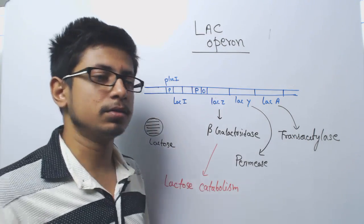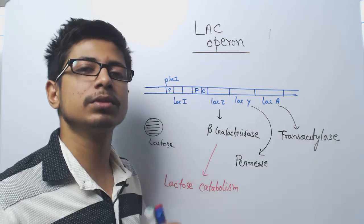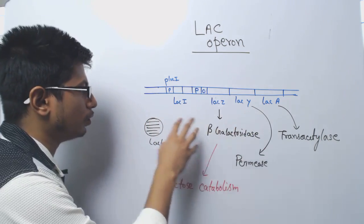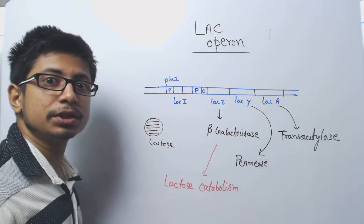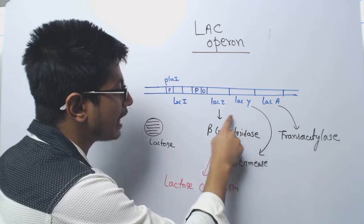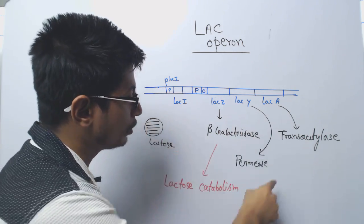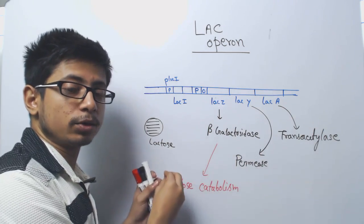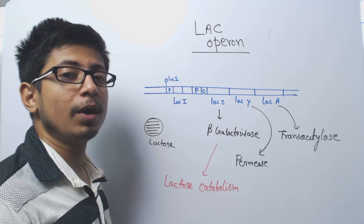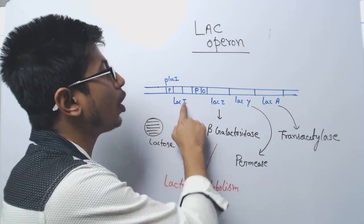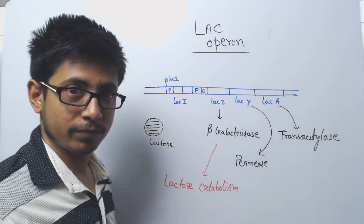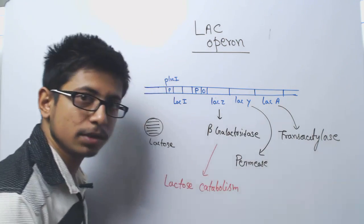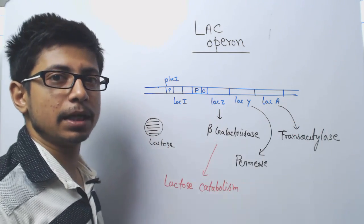The bacteria will try to break down lactose — they will take it up and break it down to generate energy. To do that, they have to synthesize beta-galactosidase, permease, and transacetylase. They need these gene products to uptake lactose and break it down. So what they will do is turn on this operon, which means they keep producing these enzymes, allowing them to uptake lactose and break it down.